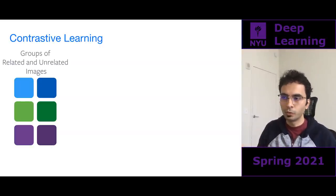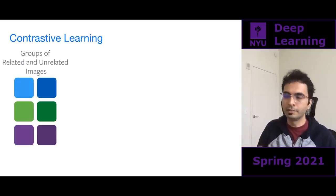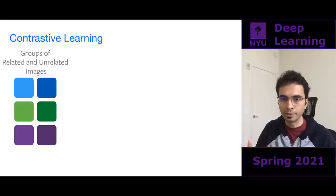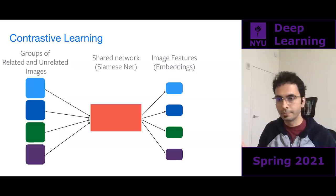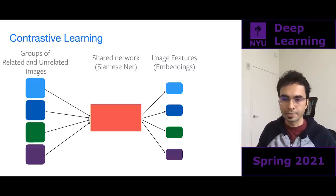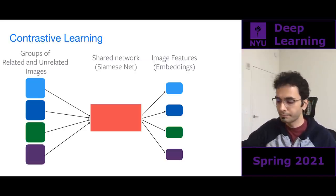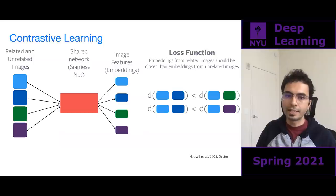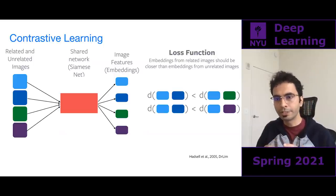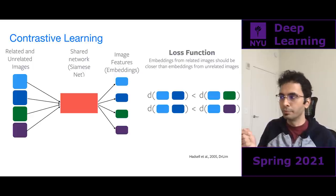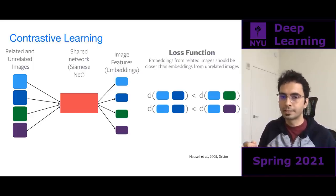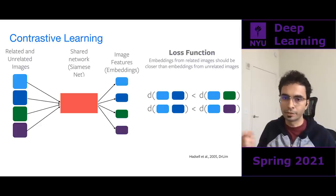In contrastive learning, you have groups of related and unrelated images. You take a shared Siamese network and compute embeddings for each item. The loss function tries to say that all related embeddings should be close in feature space compared to the unrelated images. You form pairs to satisfy this constraint — the distance between blue embeddings should be less than the distance between blue and green or blue and purple embeddings.